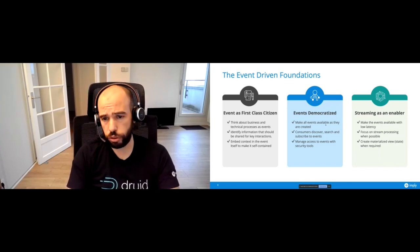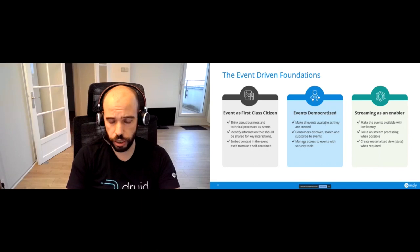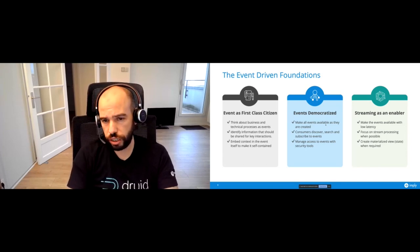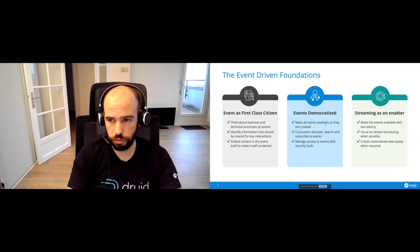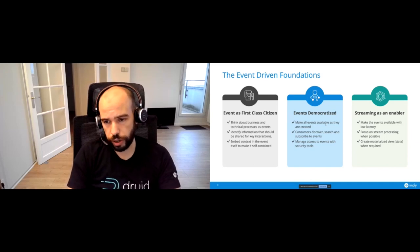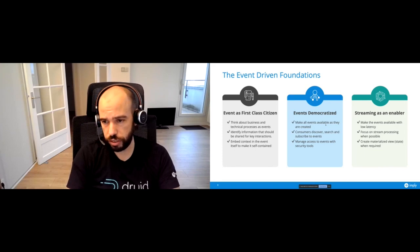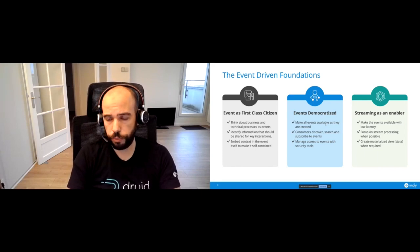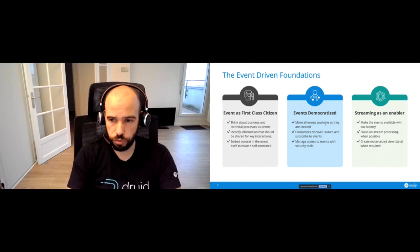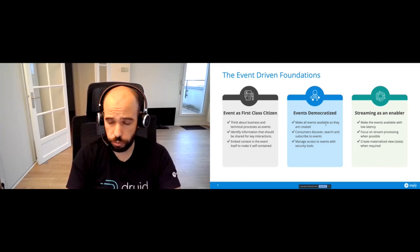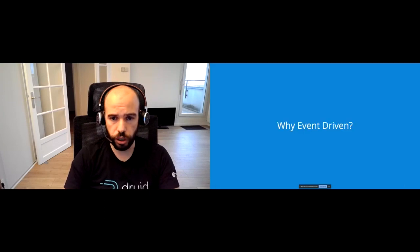The main objective is to democratize these events and make them available for anyone in the organization interested in consuming and using them — whether to update internal state or to interact with other teams and systems. Anyone will be able to discover, search, and subscribe to these events with appropriate security. Streaming technologies like Apache Kafka or Pulsar are used as technical enablers, making possible this data sharing, subscription mechanism, and event replay — serving as building blocks for the event-driven organization.